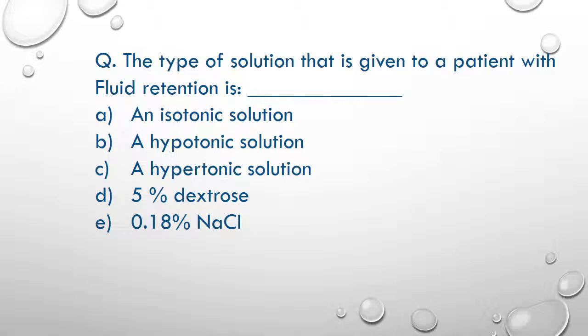The type of solution that is given to a patient with fluid retention is: A. an isotonic solution, B. a hypotonic solution, C. a hypertonic solution, D. 5% dextrose, or E. 0.18% NaCl. The correct choice is C, a hypertonic solution, to remove excess fluid from the body.